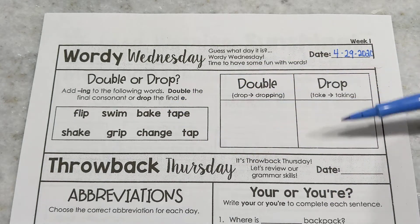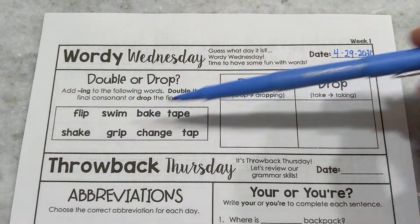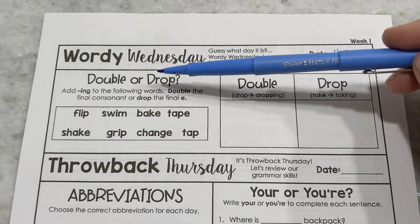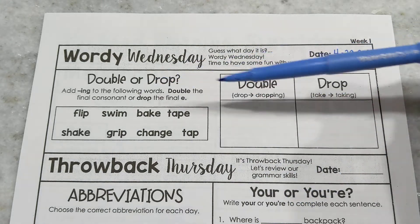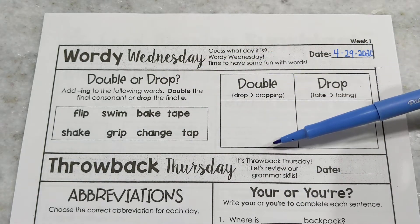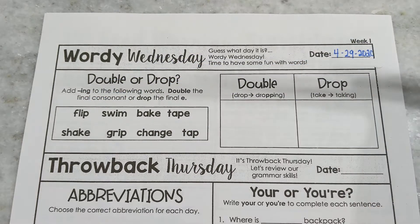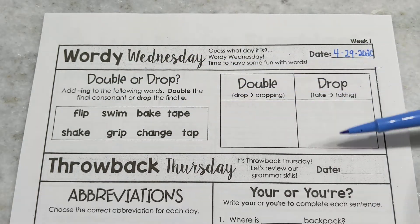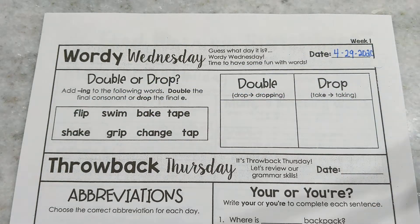We have a little graph here where we're going to be writing our words, and here we have a word bank of words that we're going to fix and add suffixes to. We're going to add -ing to each of these words. We have to decide: are we going to double the consonant or drop the e? If it ends with e, we're probably going to drop the e. If it ends in a consonant, we're probably going to double that consonant. That's pretty simple.